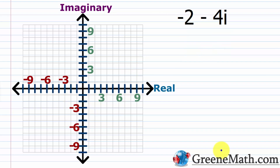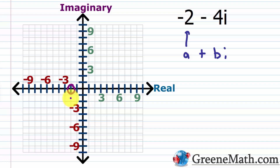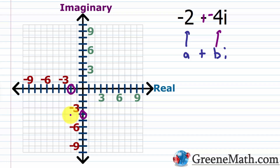Let's try another one. For negative 2 minus 4i, matching to a plus bi, my a is negative 2 and I can rewrite the minus 4i as plus negative 4i, so my b is negative 4. On the real axis, I go 2 units to the left. On the imaginary axis, I drop down 4 units. This is just like plotting (−2, −4) in the real number system, giving me my point for negative 2 minus 4i.